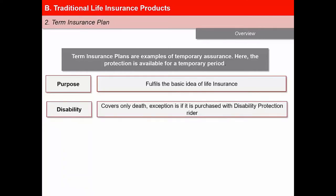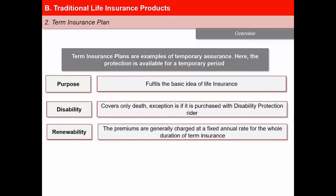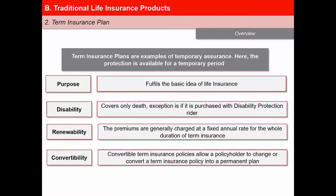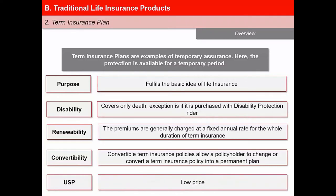Normally a term insurance policy covers only death. However, if someone has purchased a policy along with a disability protection rider, the insurance company will provide a payout to the insured person. The premiums are generally charged at a fixed annual rate for the whole duration of term insurance. A convertible term insurance policy allows a policyholder to change or convert a term insurance policy into a permanent plan. The unique selling proposition, or USP, of a term insurance plan is its low price, enabling one to buy relatively large amounts of life insurance on a limited budget.